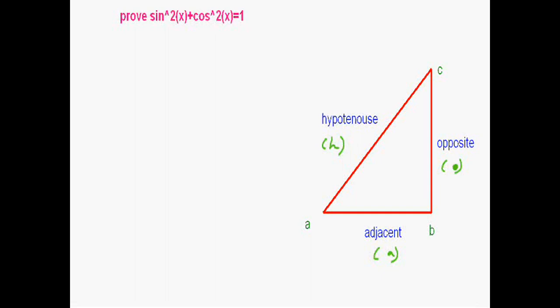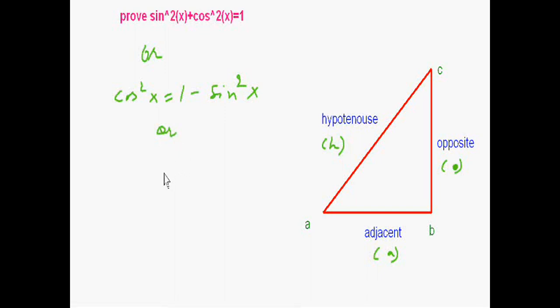This is the equation which we have to prove: sin²x + cos²x = 1. Equivalently, we can say we have to prove cos²x = 1 - sin²x, or sin²x = 1 - cos²x.